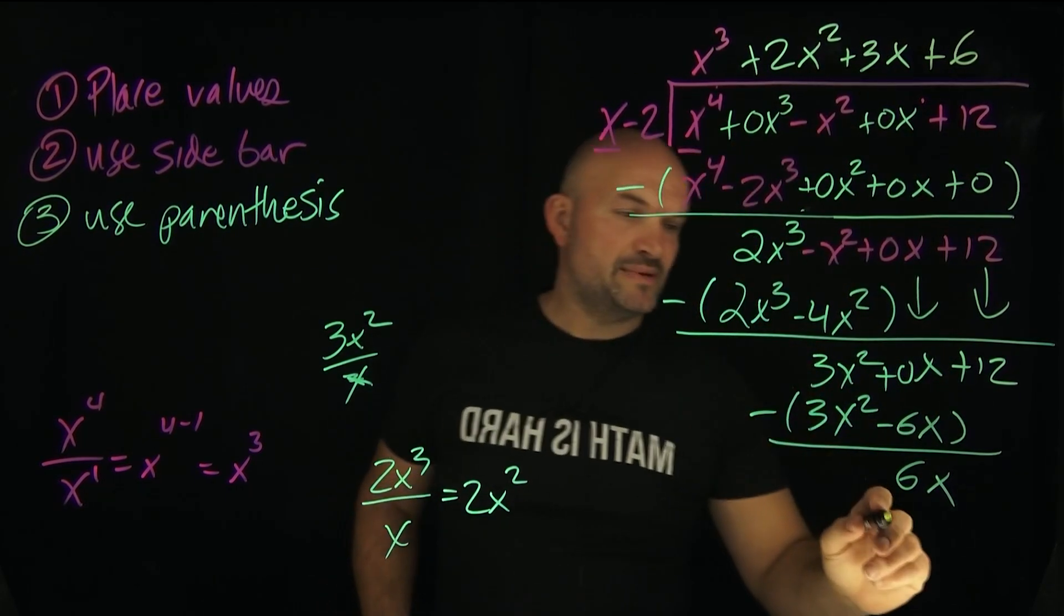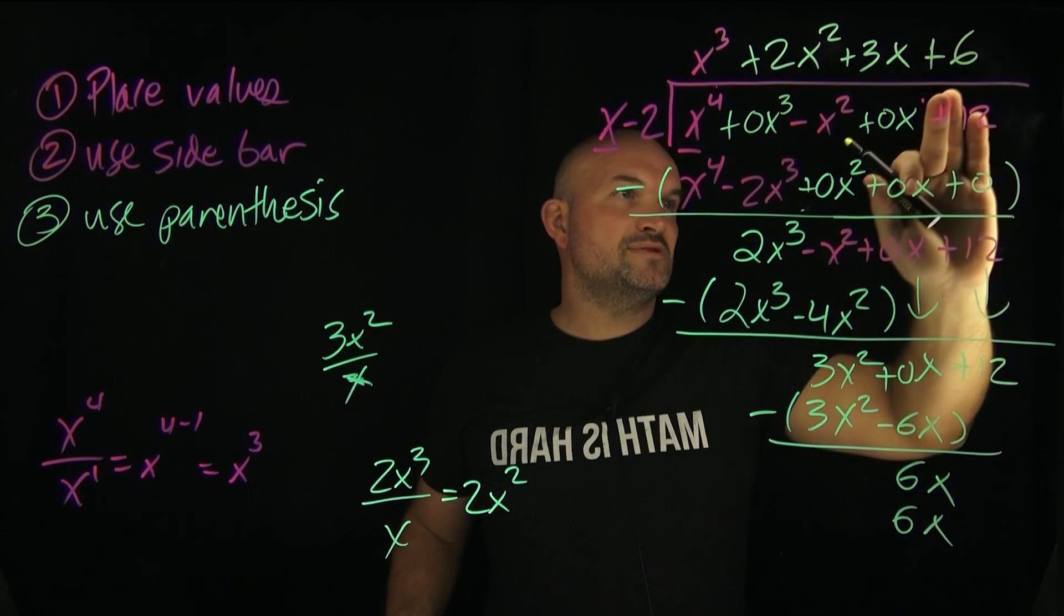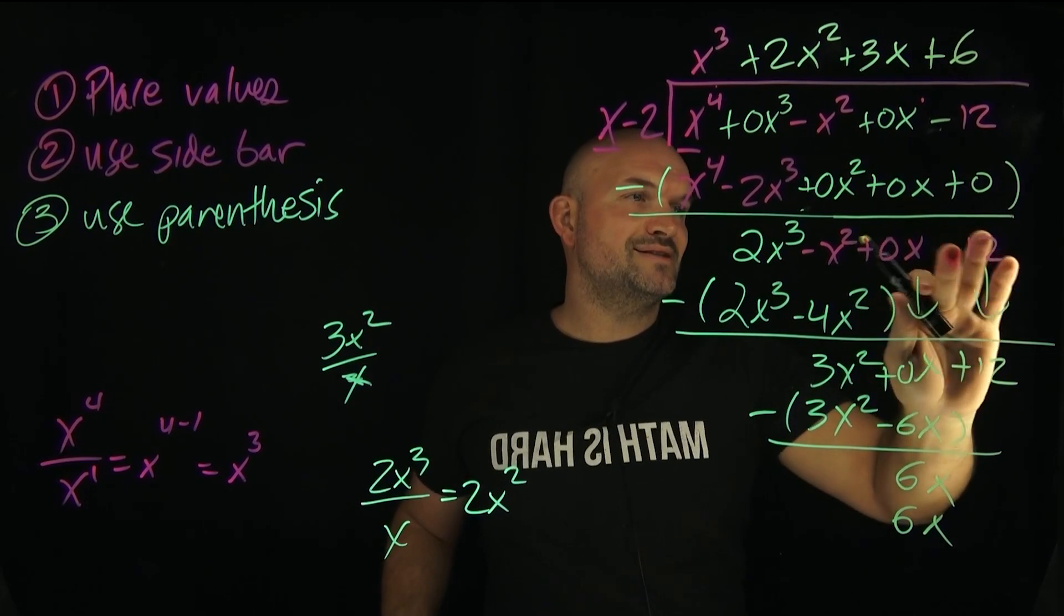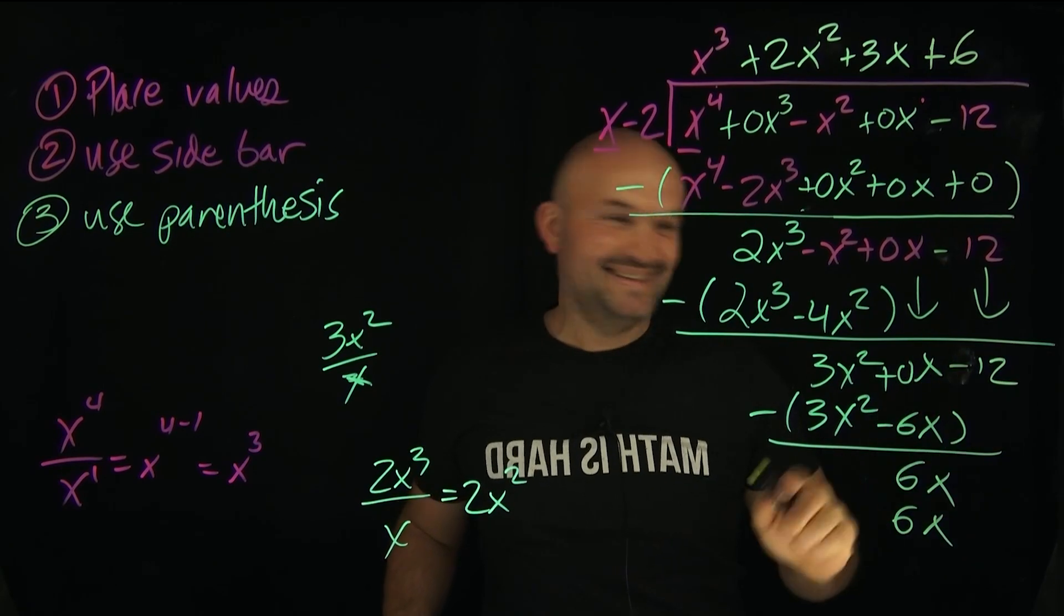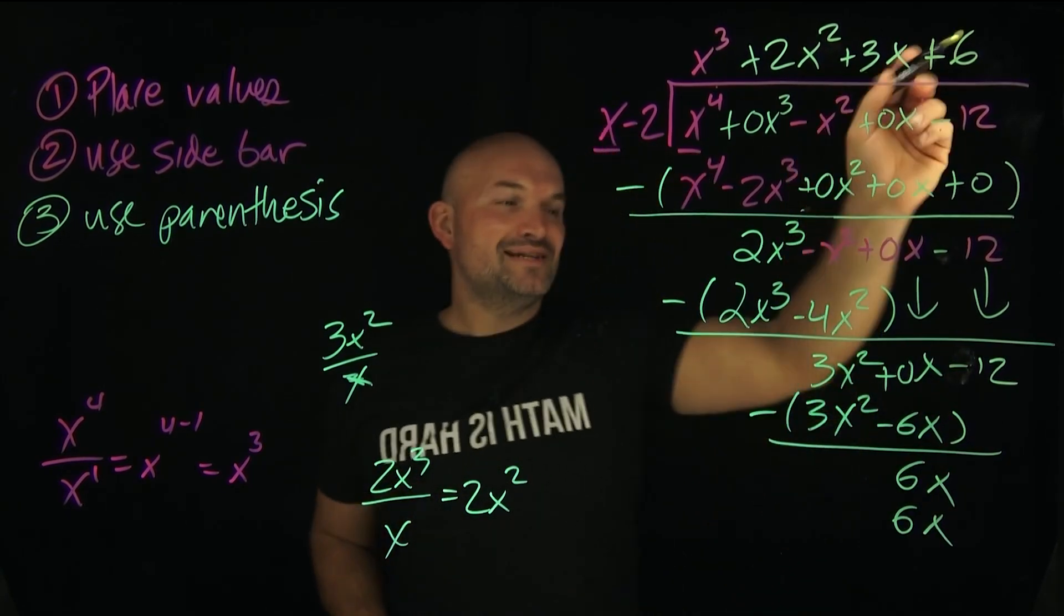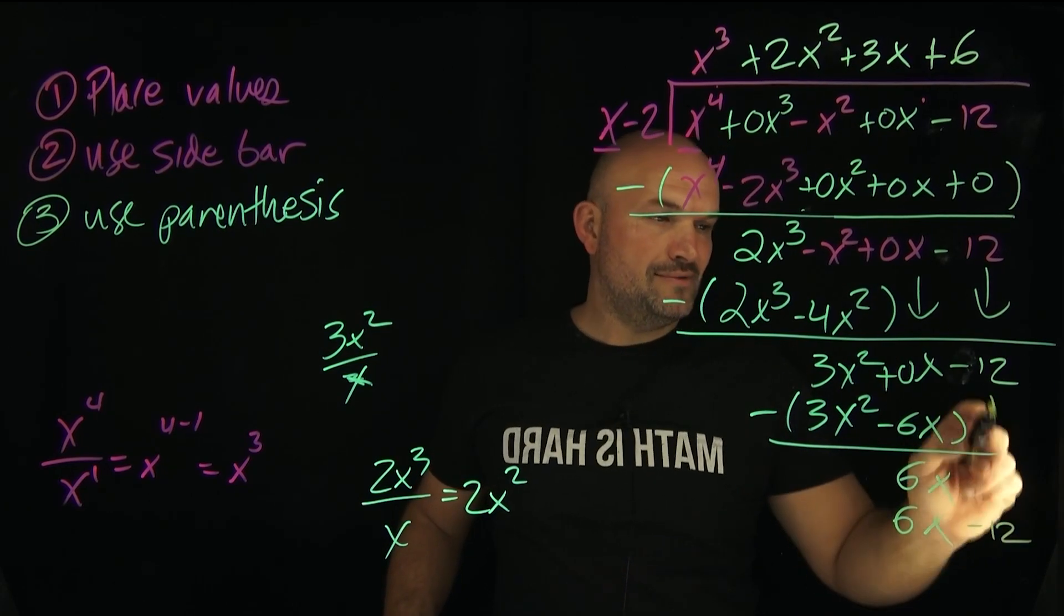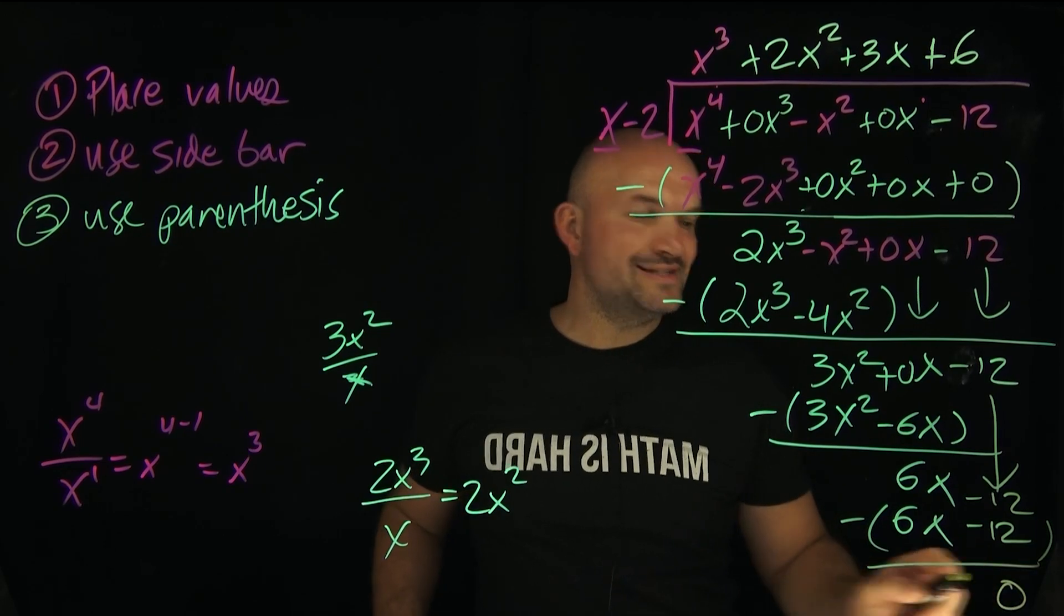6 times x is going to be 6x. 6 times -2 is going to be... oh, that was supposed to be -12. My bad. I wanted this to give a remainder of 0, so I'm going to fix the answer at the end. 6 times -2 is going to be -12. Bring that down. Subtract our rows. And guess what? We're going to get 0 as a remainder.